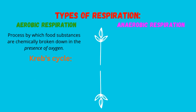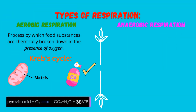The Krebs cycle is the second stage of aerobic respiration. It occurs in the mitochondria — specifically in the matrix of the mitochondria — and this stage requires oxygen. In this stage, pyruvic acid formed in the first stage is oxidized, meaning it reacts with oxygen to form carbon dioxide, water, and ATP.